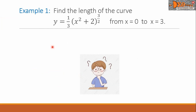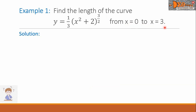Example 1: find the length of the curve y equals 1 over 3 times the quantity x squared plus 2, raised to the exponent 3 over 2, from x equals 0 to x equals 3. Let us write our formula of the arc length here to guide us.